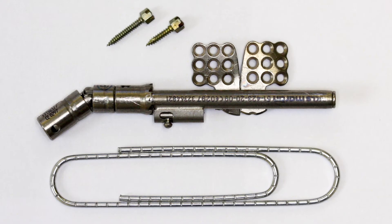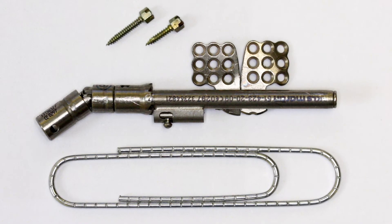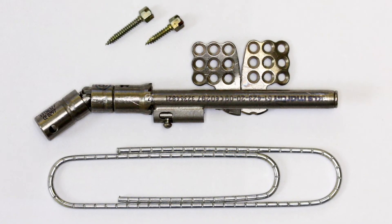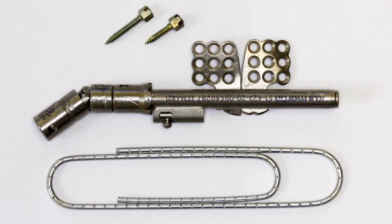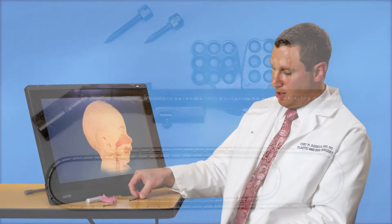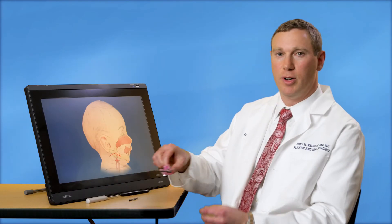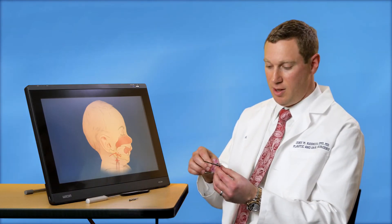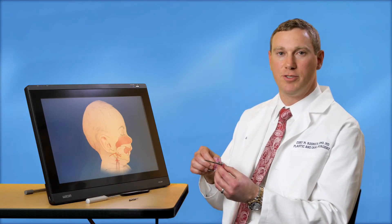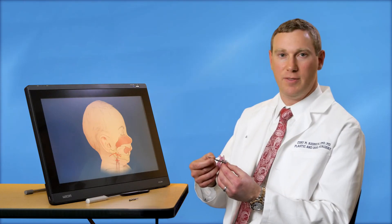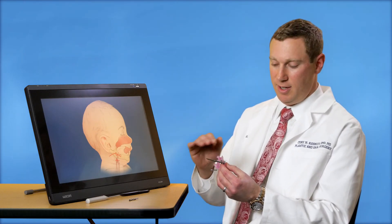This is an example of a mandibular distraction device that I would use. As you can see, it's very small and uses screws that are one millimeter in diameter. When the device is applied to the jawbone, it looks like this. The only portion of the device that emerges from the skin is this activation arm. The rest is completely buried.